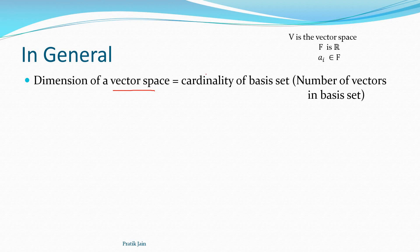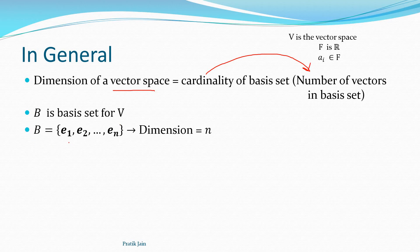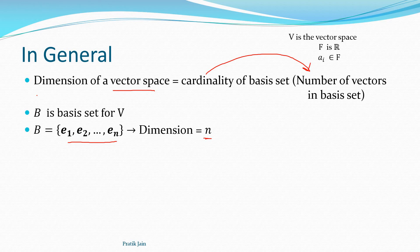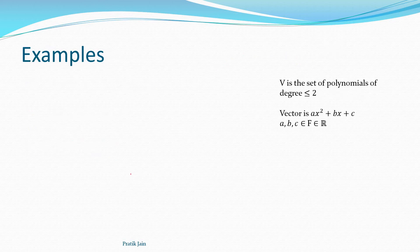In general, the dimension of a vector space is the cardinality of the basis set — the number of vectors in the basis set. If B is the basis set with different vectors, the number of vectors in B tells you the dimension of the vector space. If there are two vectors it is two-dimensional; if there are n vectors it is n-dimensional; if there is only one vector, like in this case, it is one-dimensional.